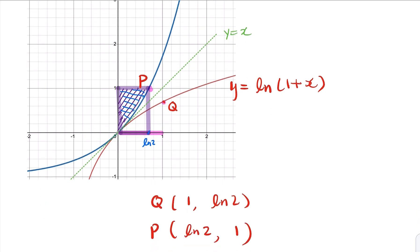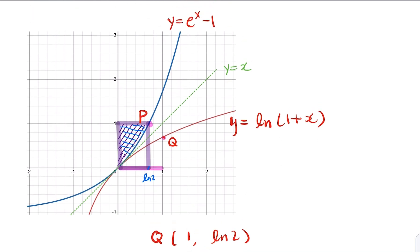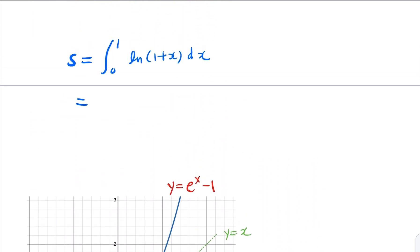So the point Q and P. Original integral is from 0 to 1, and in this inverse function, we're going to be from 0 to log 2. So the rectangle is log 2 times 1.